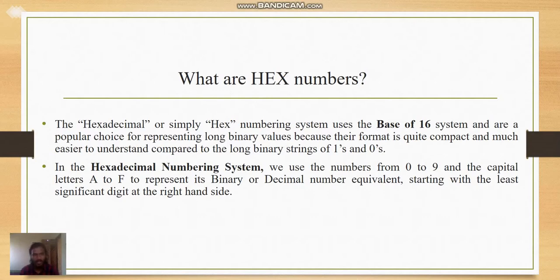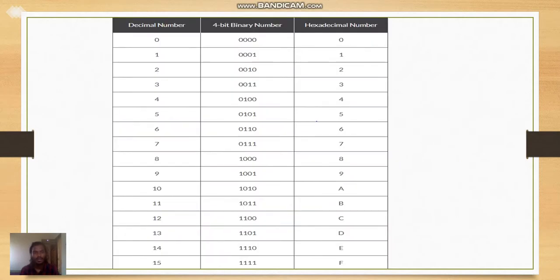For the hexadecimal numbering system, we use the numbers from 0 to 9 and the capital letters A to F to represent its binary or decimal number equivalent, starting with the least significant digit at the right-hand side. Let us have a look at the decimal numbers and their equivalent hexadecimal numbers.